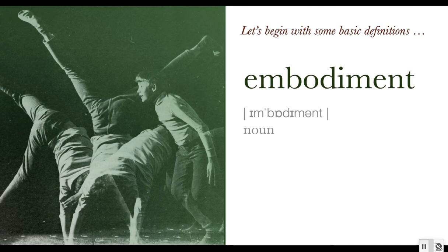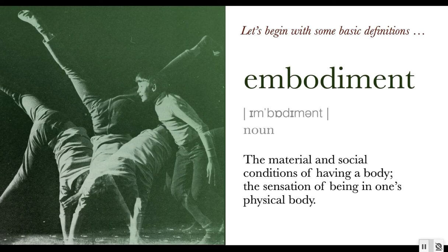Let's talk now about the word embodiment. Here's my personal definition, which comes in two parts. Embodiment is the material and social conditions of having a body. This means both the physical as well as the social and cultural factors that inform us about what it means to have a body in the world, especially in terms of language — the words we use to describe our bodies, the context in which it happens, and culturally what's considered appropriate or not appropriate.